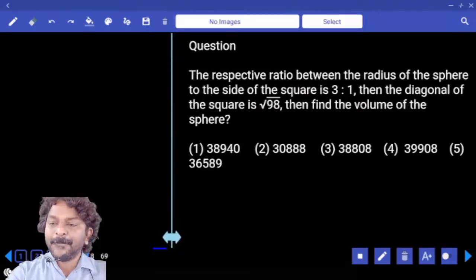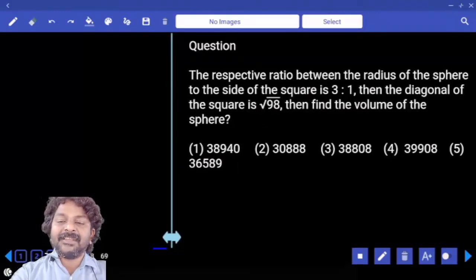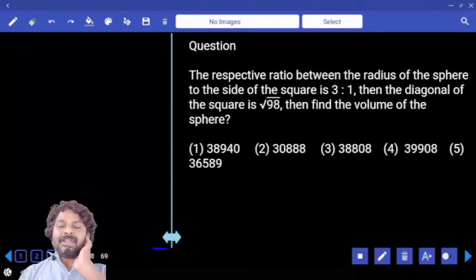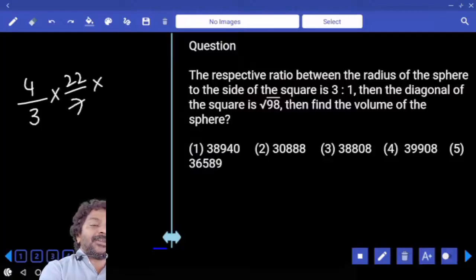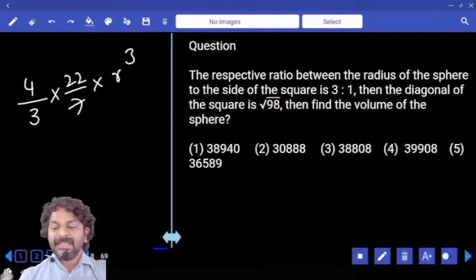The respective ratio between the radius of the sphere to the side of the square is 3 is to 1. The diagonal of the square is under root 98. Then find the volume of the sphere. What is volume of the sphere? 4 third pi r cube. Correct? Yes.